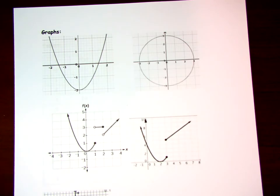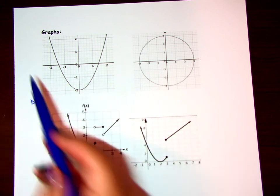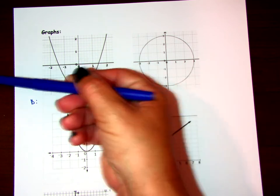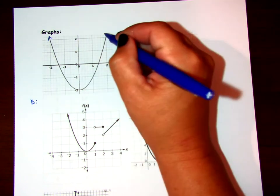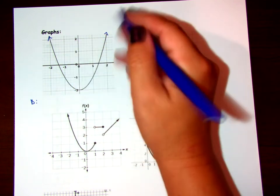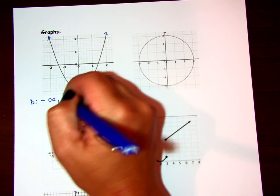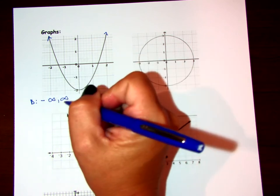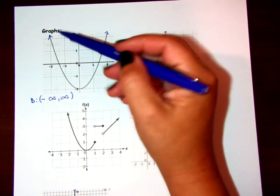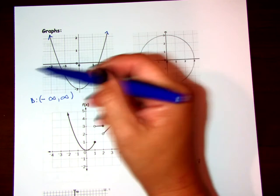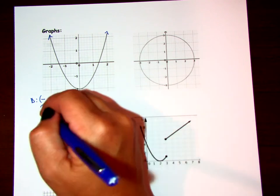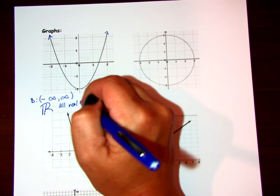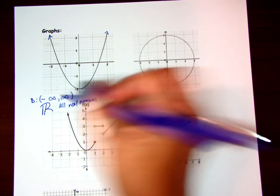On this first graph, the domain goes from left to right. The leftmost point continues forever, and the rightmost point continues forever. So the domain goes from negative infinity to infinity. Because infinity is not an included value, we use open brackets. Another way to state this domain is all real numbers, written as an R with a double line. So we could say all real numbers or negative infinity to infinity — these are two ways to state the domain.